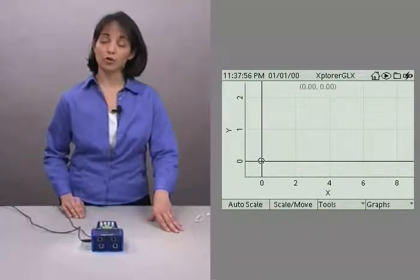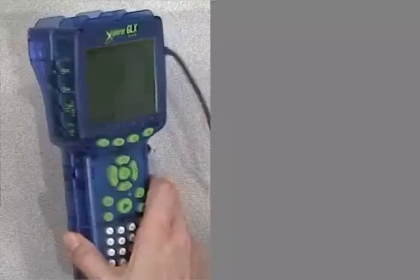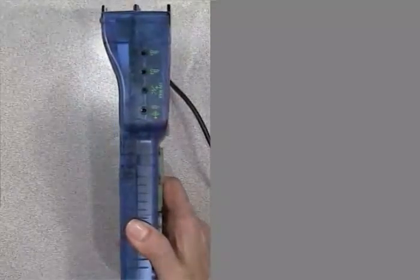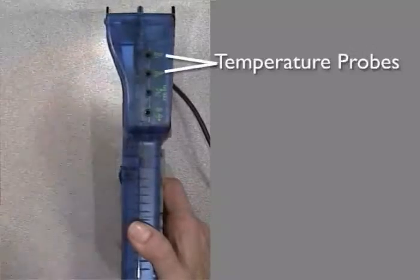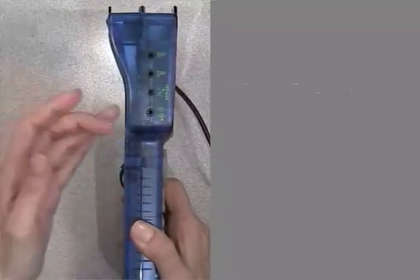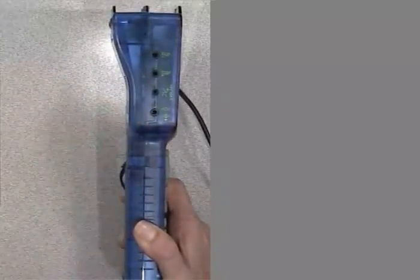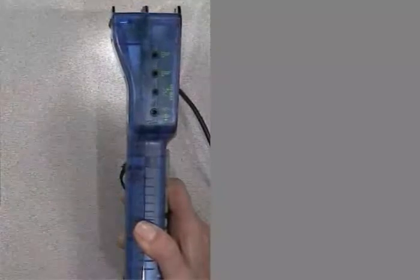Now we're ready to plug in a temperature probe into the left side of the Explorer GLX. You see here that there are four ports. The first two are for the temperature probes. The third one is for your voltage probe. And the last one is for a sound signal output. So go ahead and plug the temperature probe into either of the first two ports.